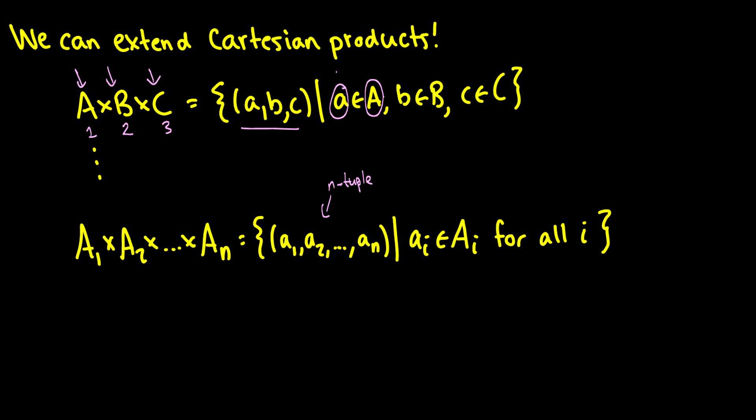And when we have n of these sets, taking the cross product of n of these sets, then we have a1 comes from capital A1, element a2 comes from set A2, all the way up for an to come from set An.